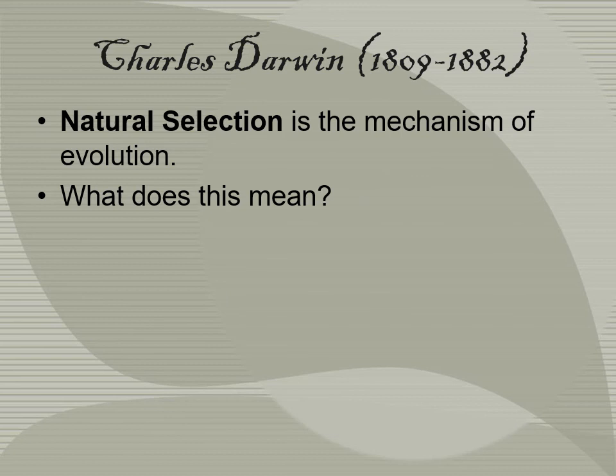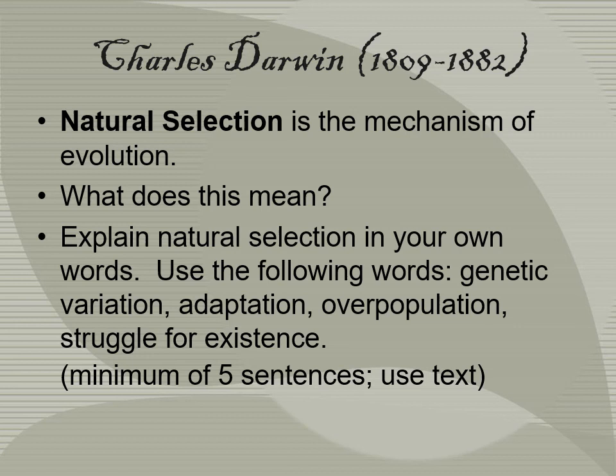Natural selection is the mechanism of evolution. Think about what that means and write it down to bring to next class. For your assignment, explain a natural selection scenario using genetic variation, adaptation, overpopulation, and struggle for existence in a minimum of five sentences.